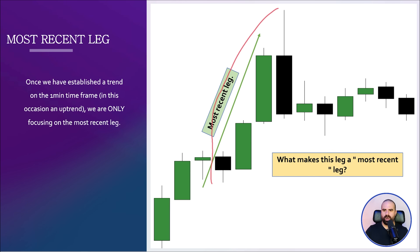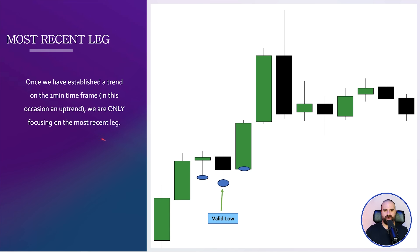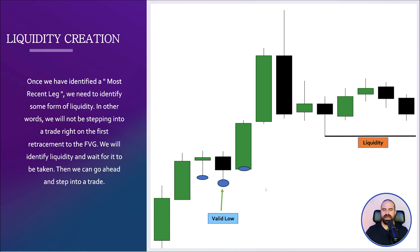The most recent leg was initiated right here. This is the valid low, as it is lower than the low to the right and to its left. Now — liquidity creation — this is very important. Once we have identified the most recent leg, we need to identify some form of liquidity. We will NOT be stepping into the trade right on the first retracement into the FVG. We will identify liquidity, wait for it to be taken, and then we can step into a trade. The entry and stop loss, as well as the take profit, all play a role.